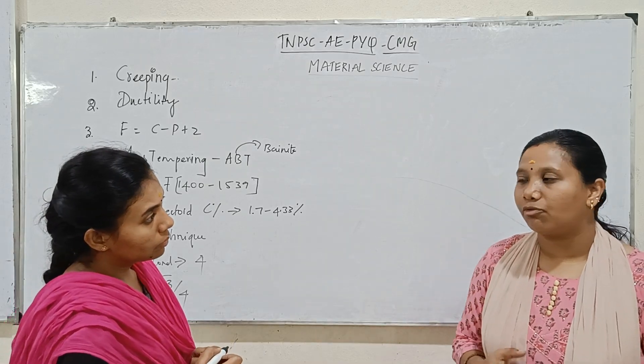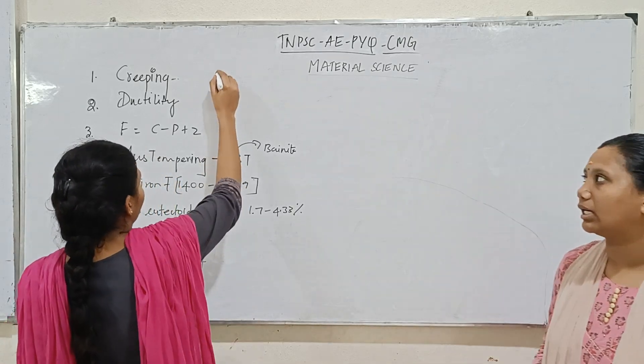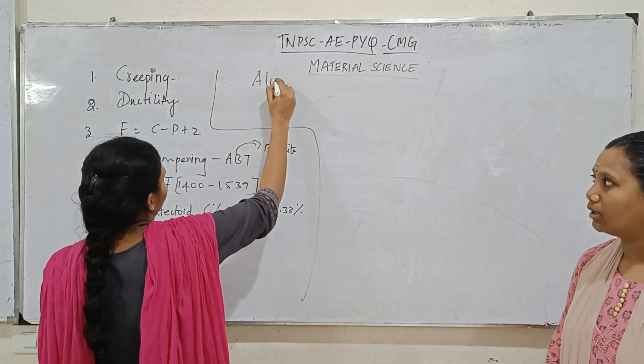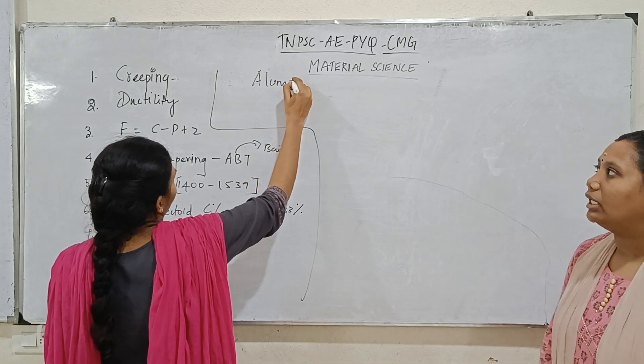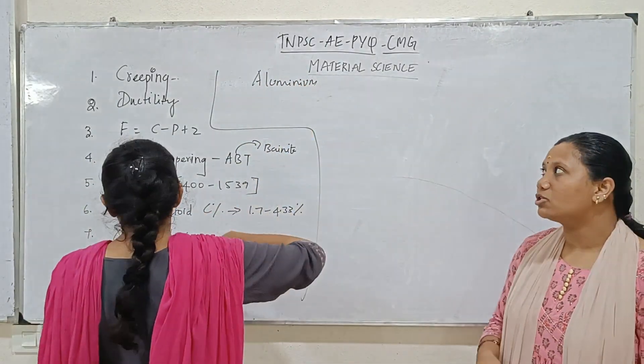The deformation of crystal by the twinning process — which element? The answer is aluminium. Aluminium deforms by twinning.